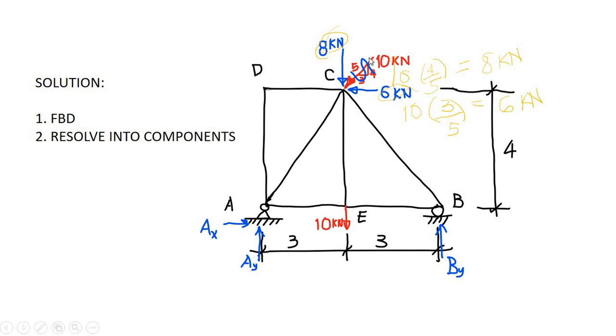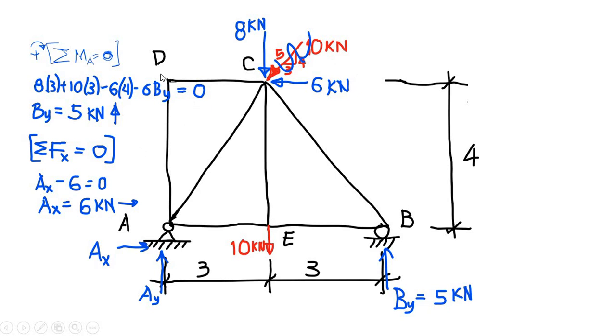After resolving this 10 kilonewton force into X and Y components, we can now have summation of moment about point A equals to 0. The reason behind why we sum moment about point A is that when we sum moment about point A, we will only have one unknown which is the reaction at BY. If you are going to sum moment about point B, then you have two unknowns, then it will be harder for you to solve for the reactions.